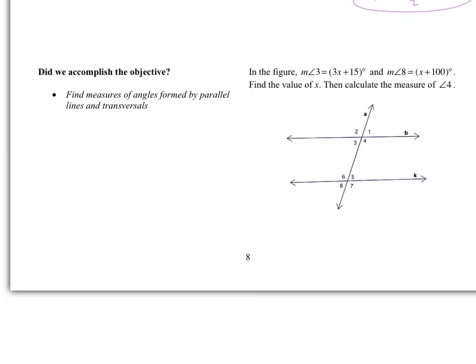Did we accomplish the objective? Today we found angle measures using parallel lines and transversals. In the figure, angle 3 is 3x + 15 and angle 8 is x + 100. Find the value of x, then calculate the measure of angle 4. Both angles are below their respective lines and to the left of the transversals — identify the angle pair, set up an equation, and solve. You should get two answers: the value of x and the measure of angle 4. Good luck.